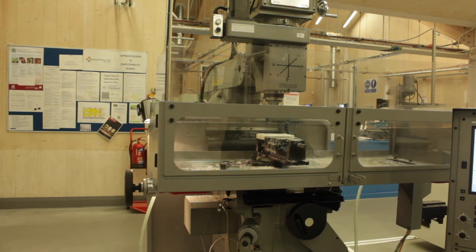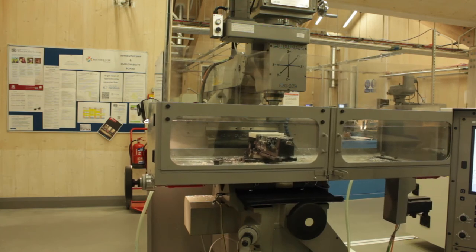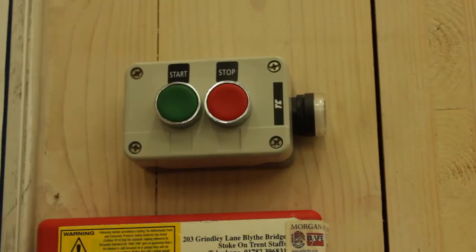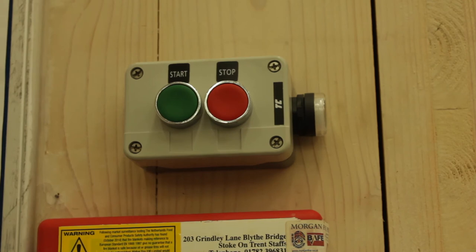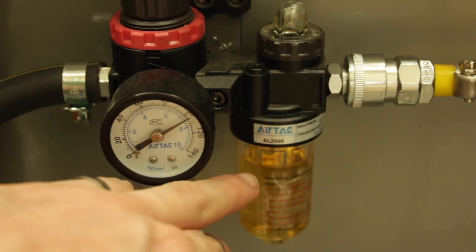When we've done that we can start the compressor and that'll give us a pneumatic air supply to the power drawbar. Check that we've got pressure and also some lubrication oil in the system.